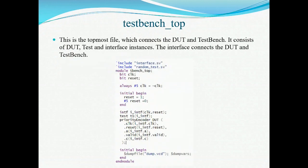Next we move on to the testbench top, which is the topmost module connecting the DUT and testbench. It consists of DUT, test, and interface. The interface connects the DUT and testbench. Here we first create the clock and testbench instance, then create an instance of the interface to connect DUT and test case. A test case instance is created and the interface handle is passed to the test as an argument. Then a DUT instance is created and the interface signals are connected to the DUT.